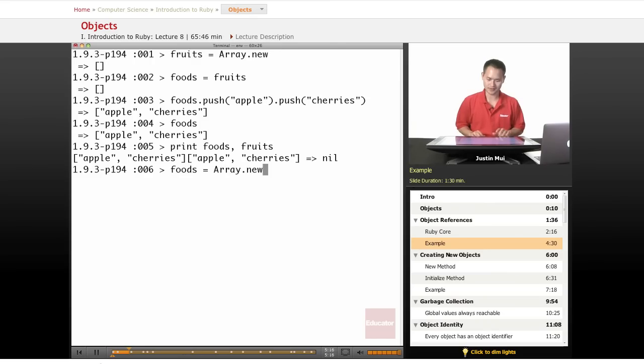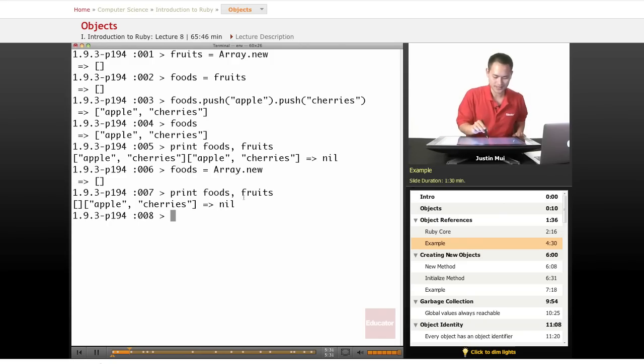But if I do on the foods, I create a new array. Now it has a different reference. So when I do the print, right there you notice the foods is empty and the fruits still has the two elements there.